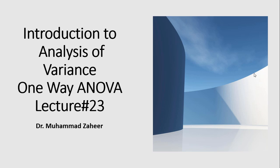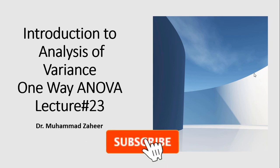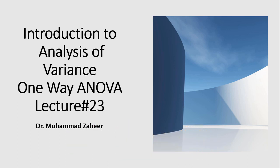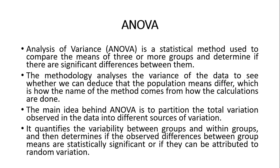As-salamu alaykum students, lecture number 21 or 22. हमने independent sample t-test और dependent sample t-test करके देखा। हमने यह देखा कि t-test में हमारे पास दो groups होते हैं। जब groups दो से ज्यादा हो जाएं independent variable के तो फिर t-test एक अच्छी choice नहीं रहती। इसके लिए हम जो test इस्तेमाल करते हैं वो है one-way analysis of variance, जिसे simply one-way ANOVA भी कहते हैं।